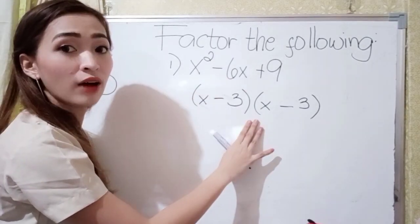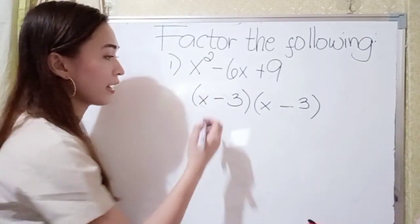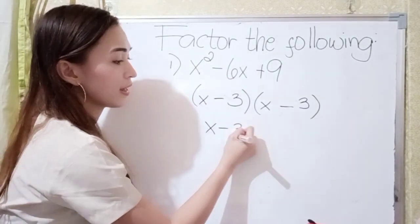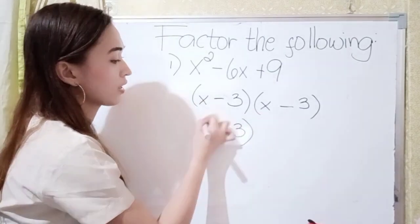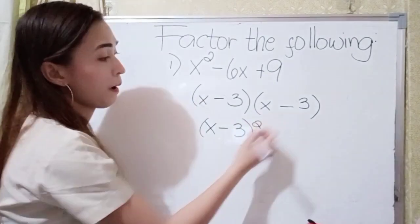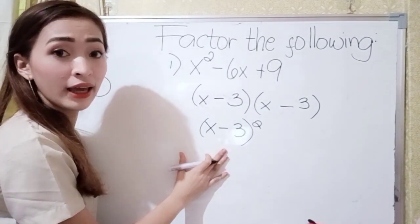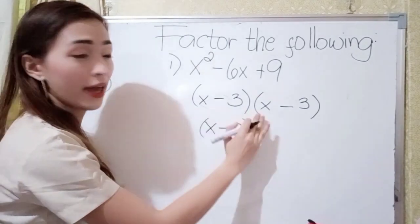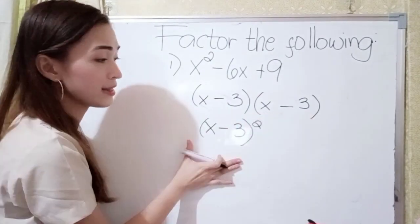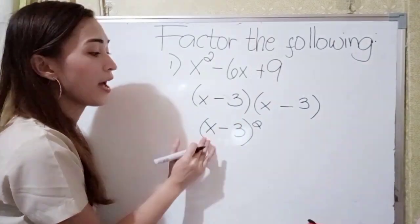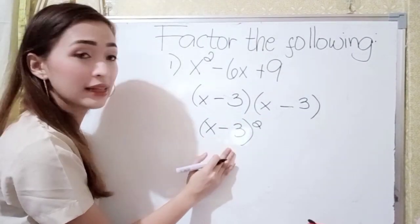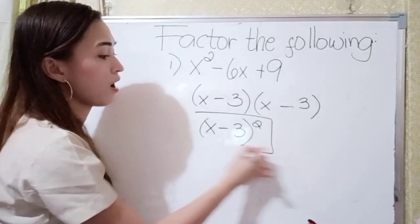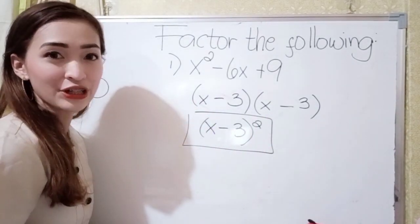So that is our answer. The final answer is x minus 3, squared. Because they are the same: x minus 3 and x minus 3. In simplified form, we have x minus 3, squared. So this is our final answer.